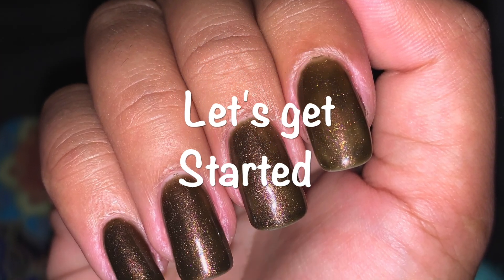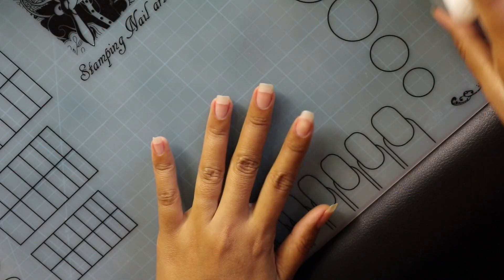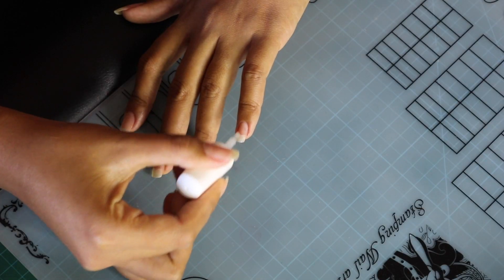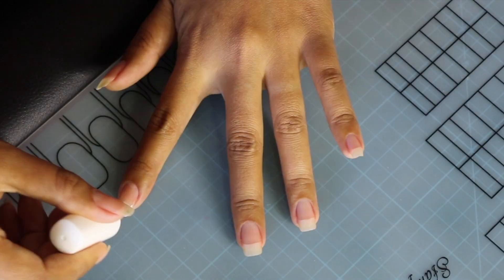I started with pH band to dehydrate my nail plate. pH band balances the nail to a neutral balance.